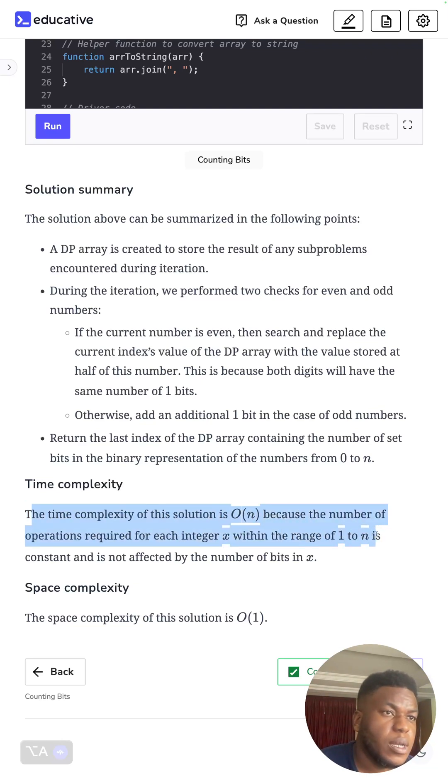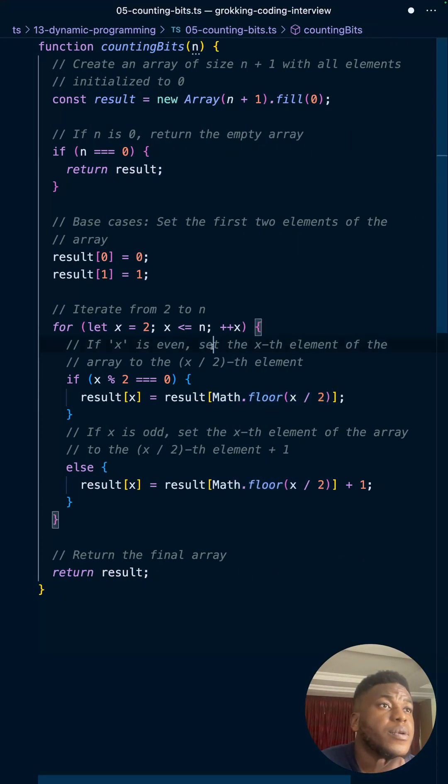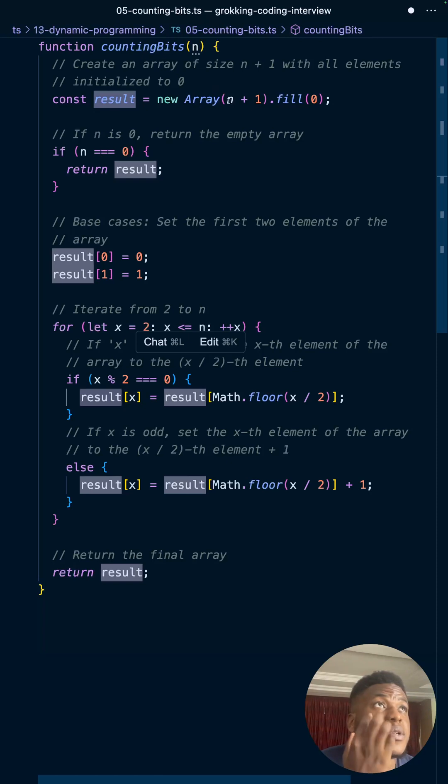Space complexity is O(1) because we're not storing anything bigger depending on the size of the array. As you can see, we loop only once, and result doesn't grow in size - it just depends on n or whatever it is. As we're building results, we don't store anything extra. That's why it's O(1). That's all, cheers.